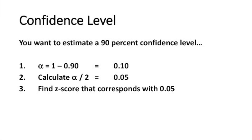Here are the three steps. We first calculate alpha, which is 1 minus 0.9, which is 0.10. Then we divide that alpha by 2, so that's 0.05. Then we'll go to our z-table to find the z-score that corresponds with 5% of the standard normal distribution.